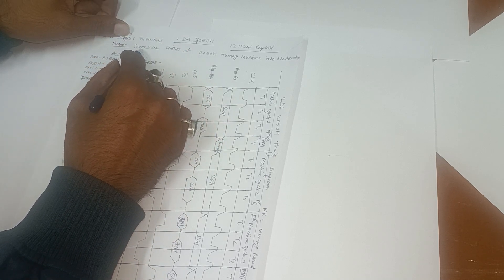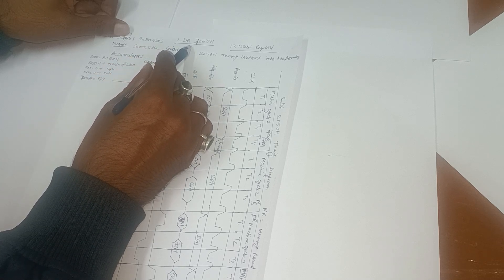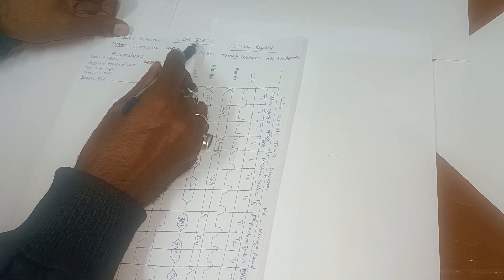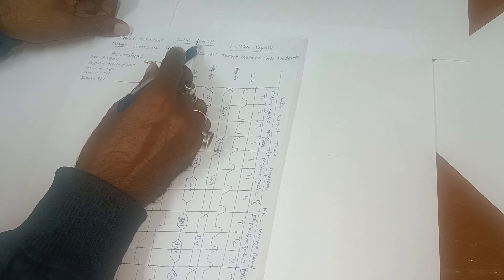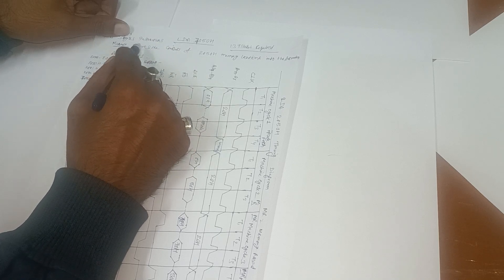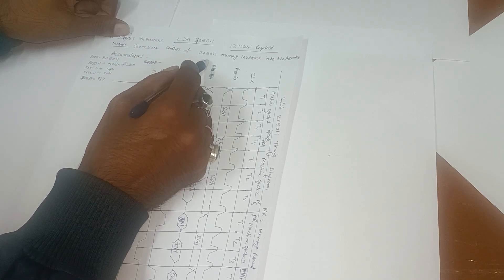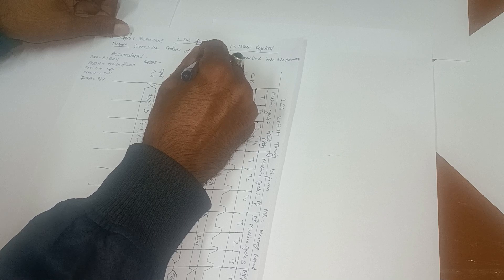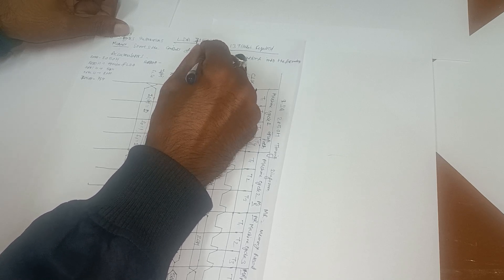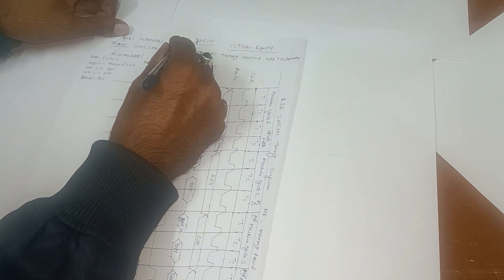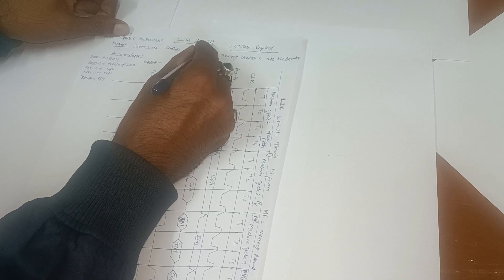For three-byte instructions, first we think about the significance — the actual meaning of LDA 7050H. LDA 7050H means load the content of memory location 7050H into the accumulator. So we are loading, or storing, the content of memory location 7050H into the accumulator.